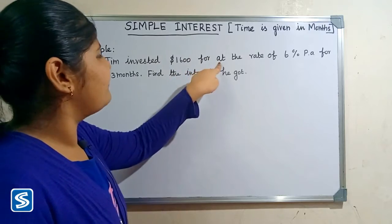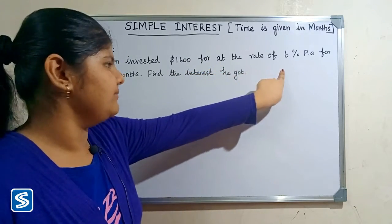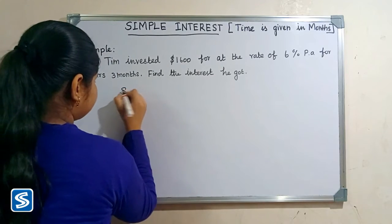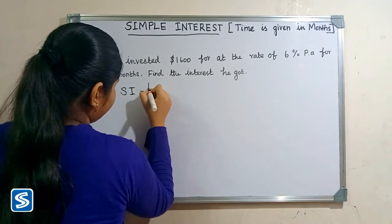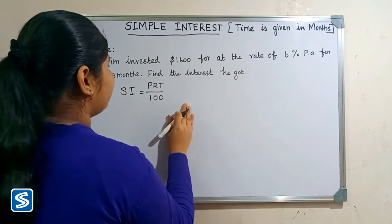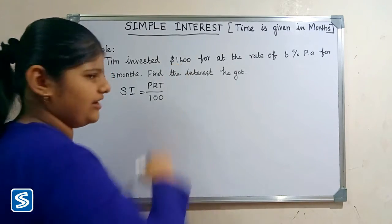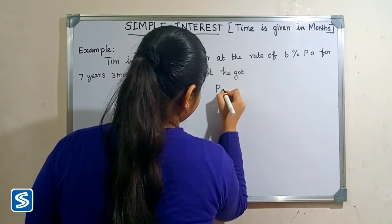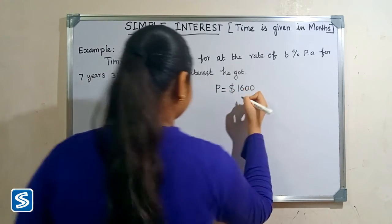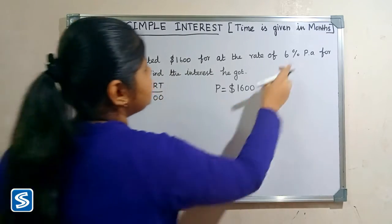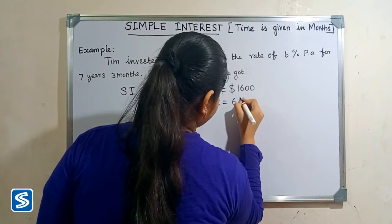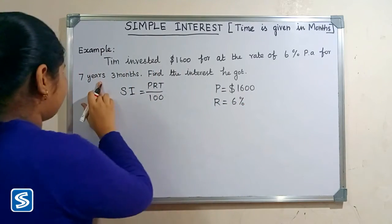Next we will take another example. Tip invested 1,600 dollars at the rate of 6 percentage per annum for 7 years 3 months. Find the interest he got. We know that simple interest is equal to PRT divided by 100. The principal amount is 1,600 dollars, rate of interest is 6 percentage, and time period is 7 years 3 months.